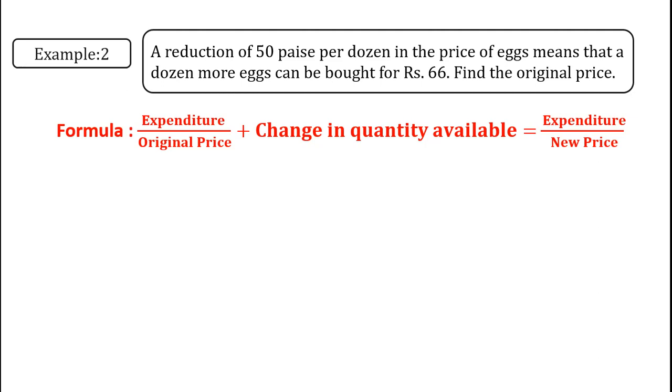Since there is a price reduction of 50 paisa, which is equal to half rupee, we can purchase one dozen more eggs. Since there is a price reduction of rupees 50 paisa, which is equal to half rupees, we can purchase one dozen more eggs.